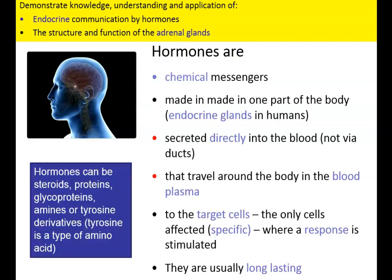Your hormonal system is made up of a group of glands called endocrine glands, which secrete hormones. What is a hormone is quite a common A-level question — it's usually worth three or four marks. Hormones are chemical messengers. They are made in one part of the body and they move to target cells, and it is only those cells that are affected, so those cells are specific. At that point, we have a response. Hormones are usually long lasting, and in animals, hormones are secreted directly into the bloodstream.